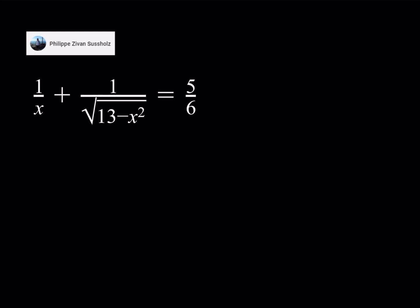And let's get started. So we do have this radical equation: 1 over x plus 1 over square root of 13 minus x squared equals 5 over 6, and we're going to be solving for values of x.